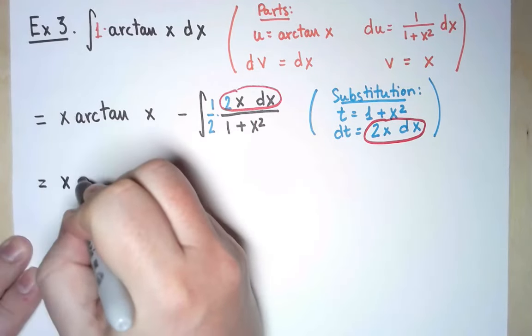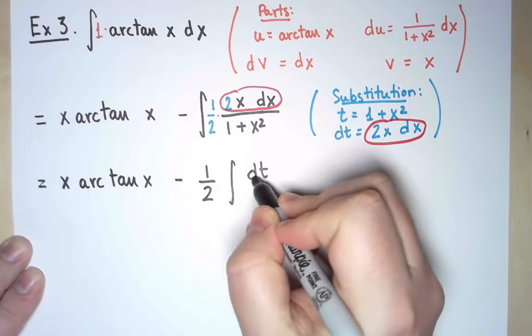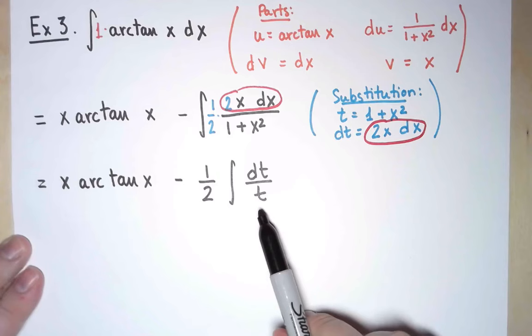and I get x arctan x minus 1 half of the integral of dt over t. And at this point, I am happy, because I know I can finish this, and now I see a path to complete the integral.